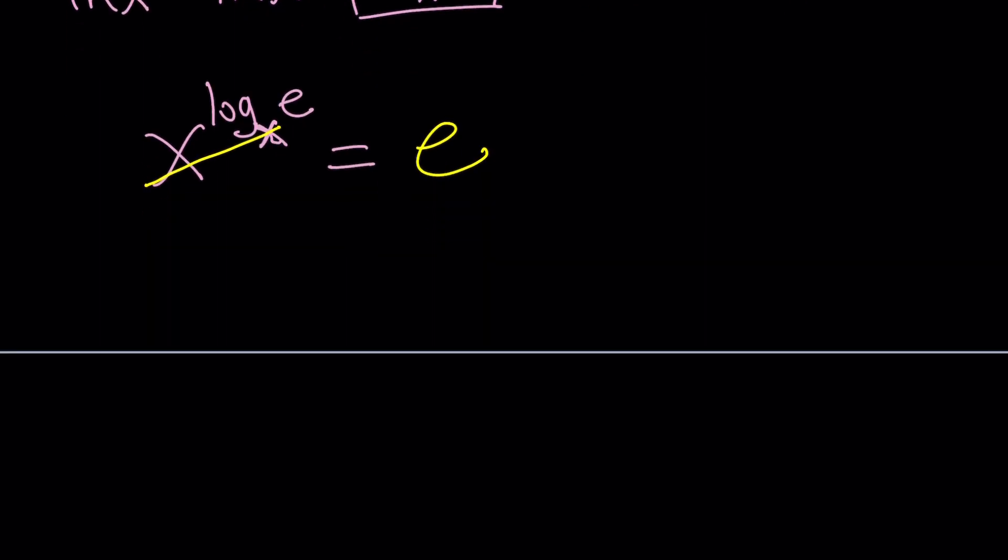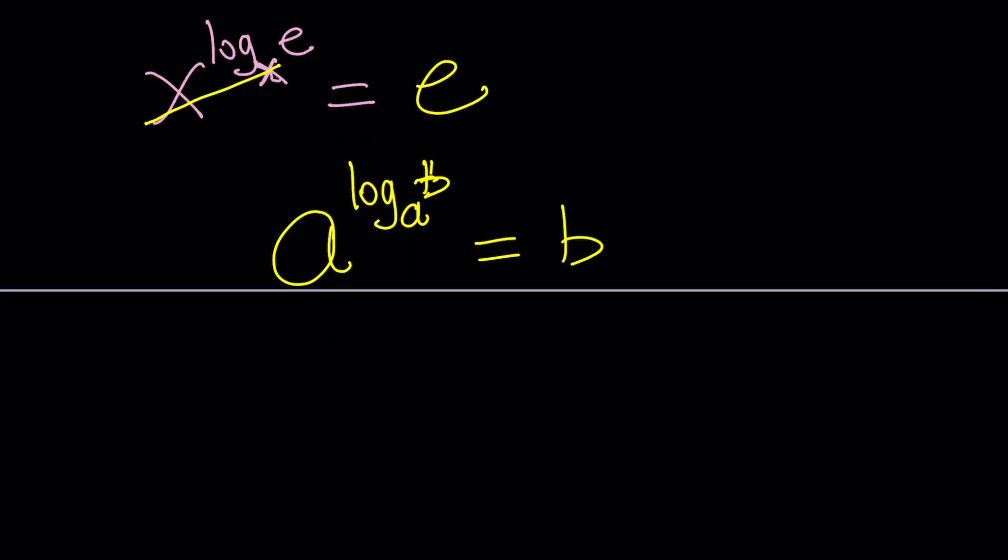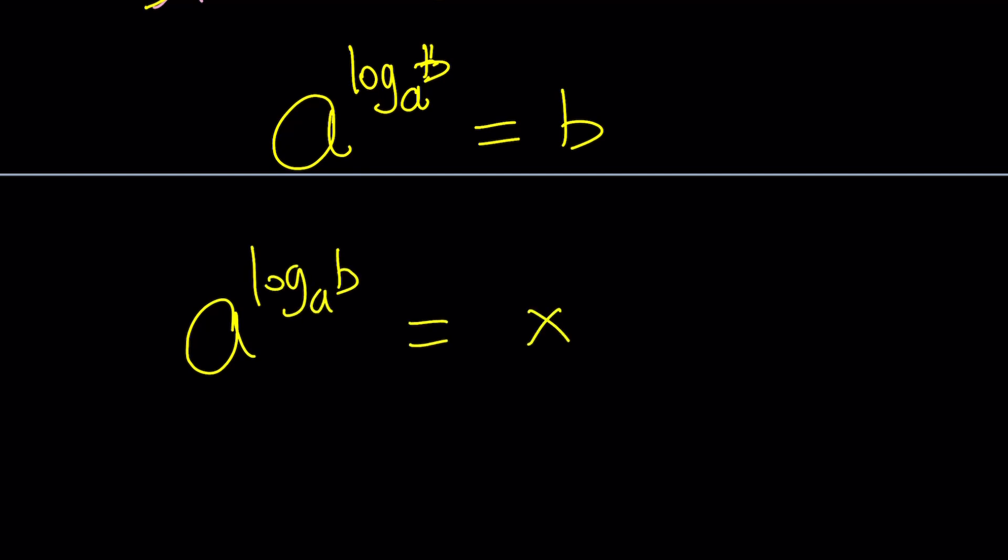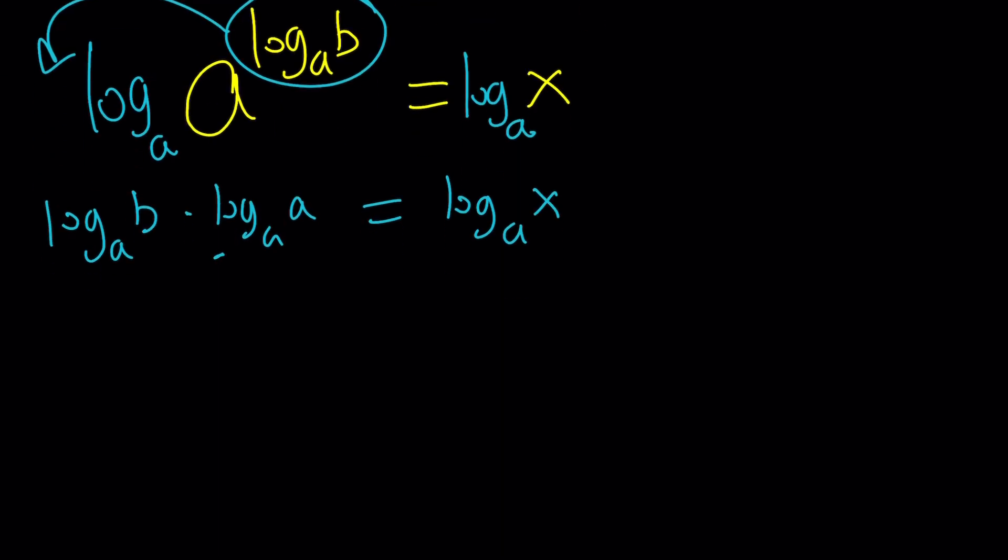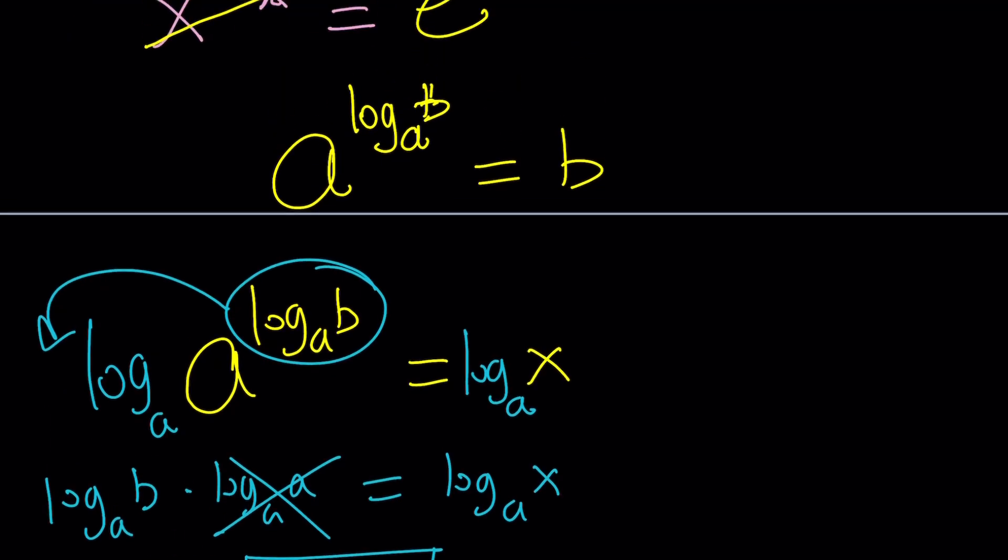So we can generalize this problem, or I should say, property, and write it as follows. If you have a to the power log b with base a, then the a's cancel out because they're both bases, and we end up with b. And this is actually easy to prove because you can kind of set this equal to x, and then log both sides with base a. If you do that, this is going to move because now it's a power. You're going to get log b with base a times log a, and then that's going to be log x with base a. Log a with base a, this is 1, so we can cross it out. And from here we get log b with base a equals log x. And now since the bases are the same, the arguments are supposed to be the same. So x equals b, which means this expression equals b, which is what we actually found with three different methods.